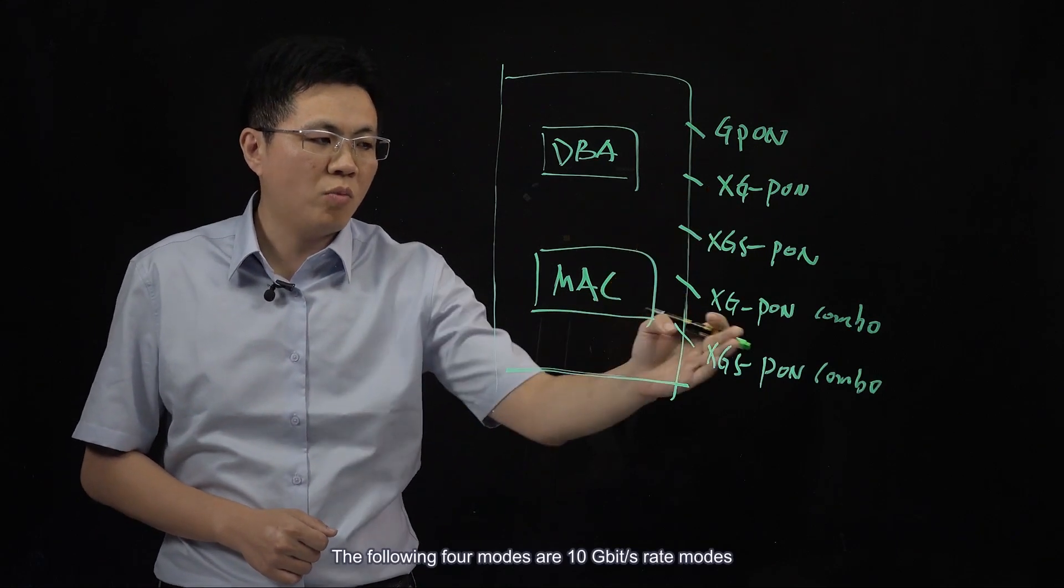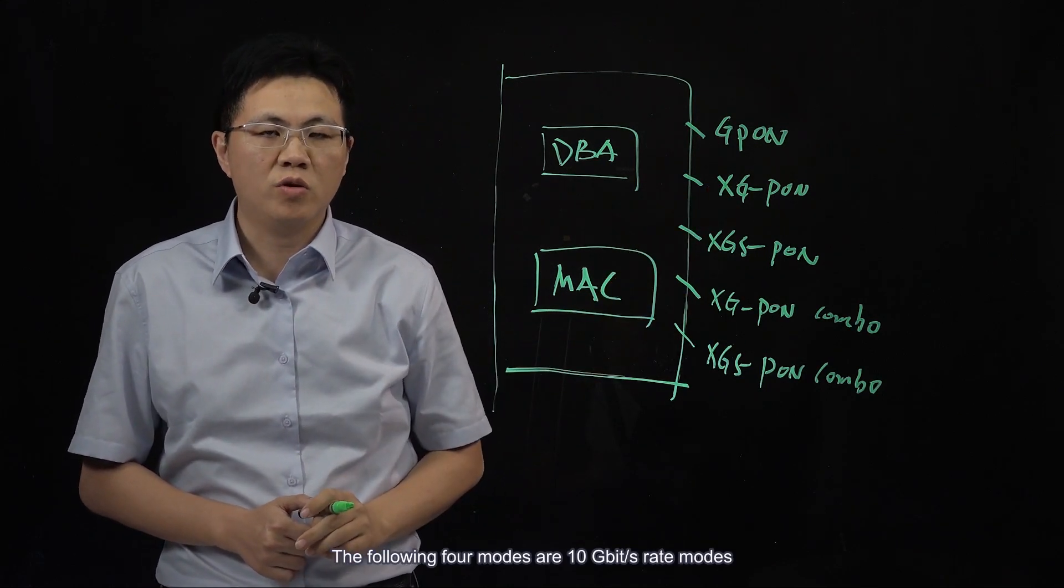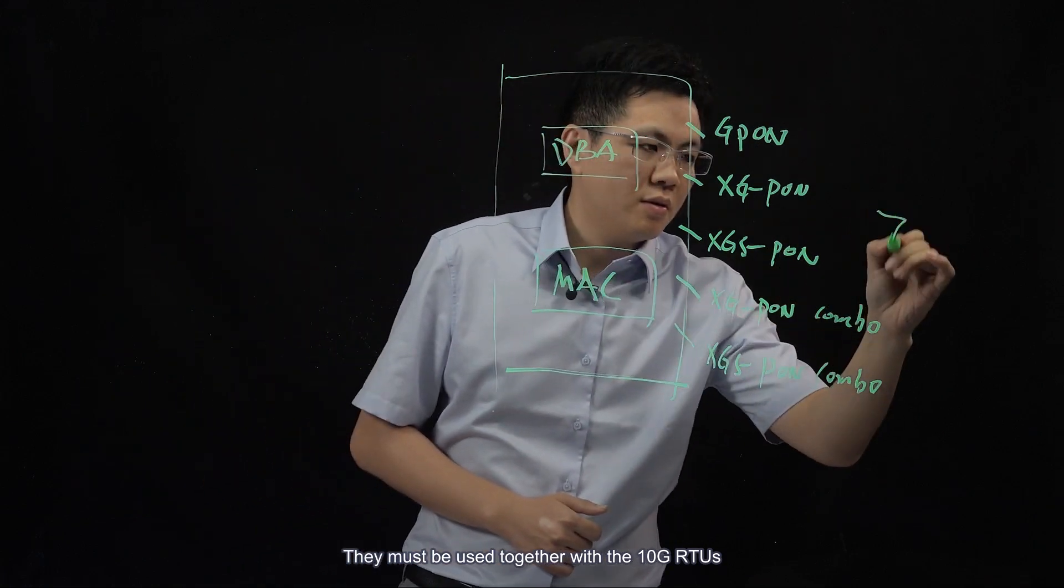The following four modes support 10 gigabits per second. They must be used together with the 10G RTUs.